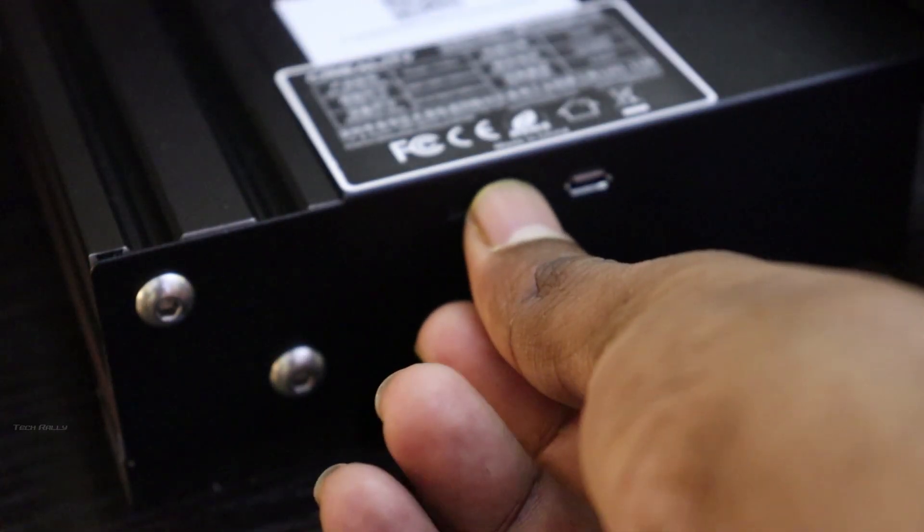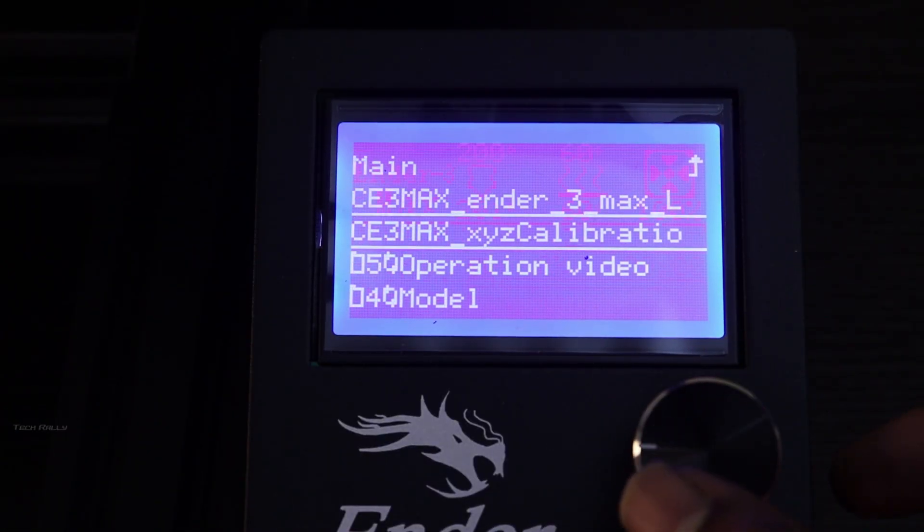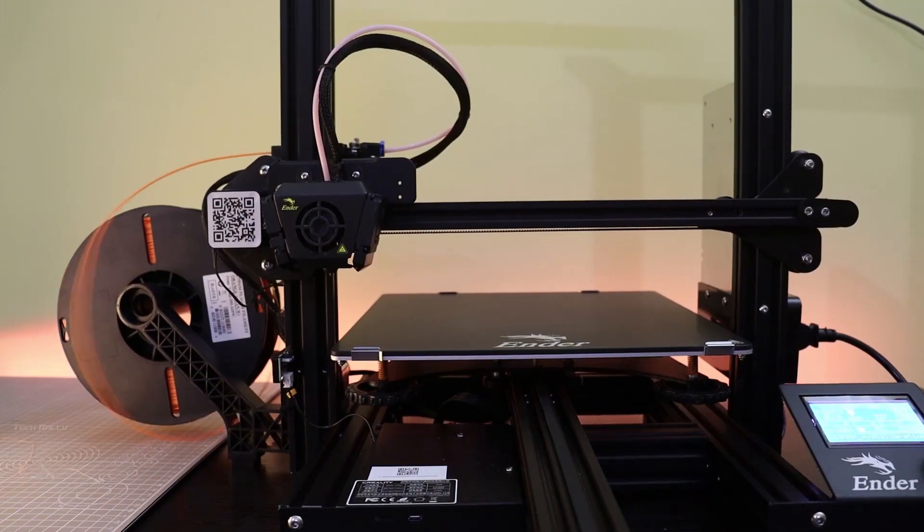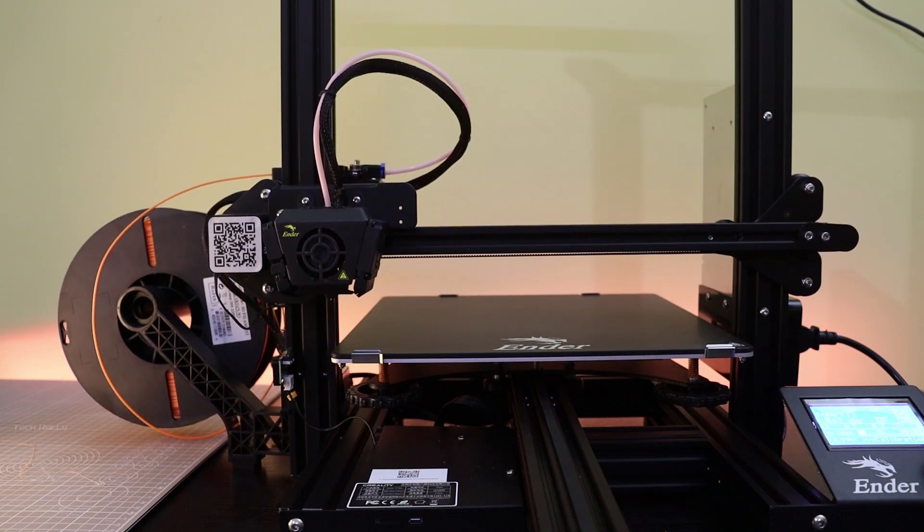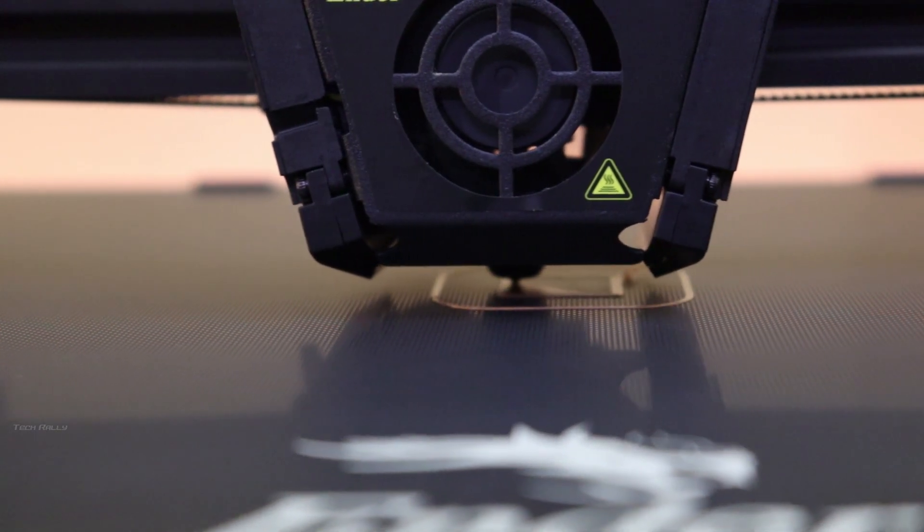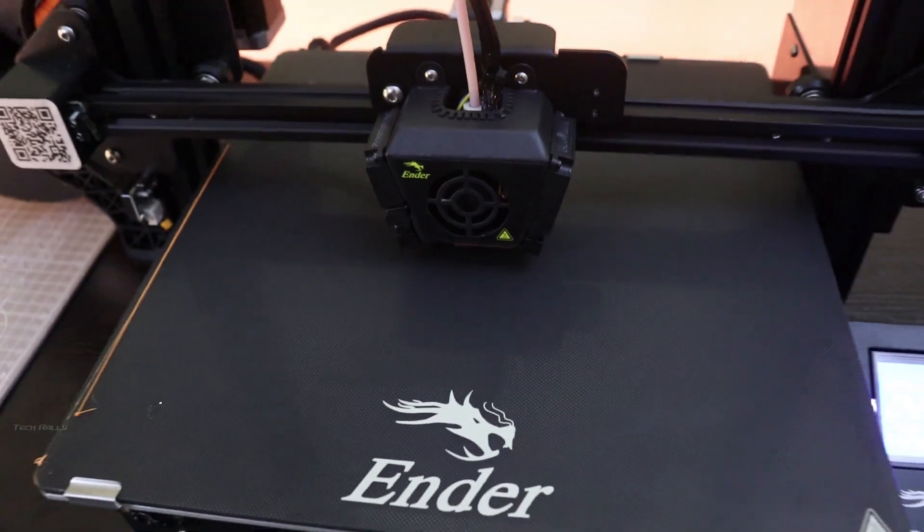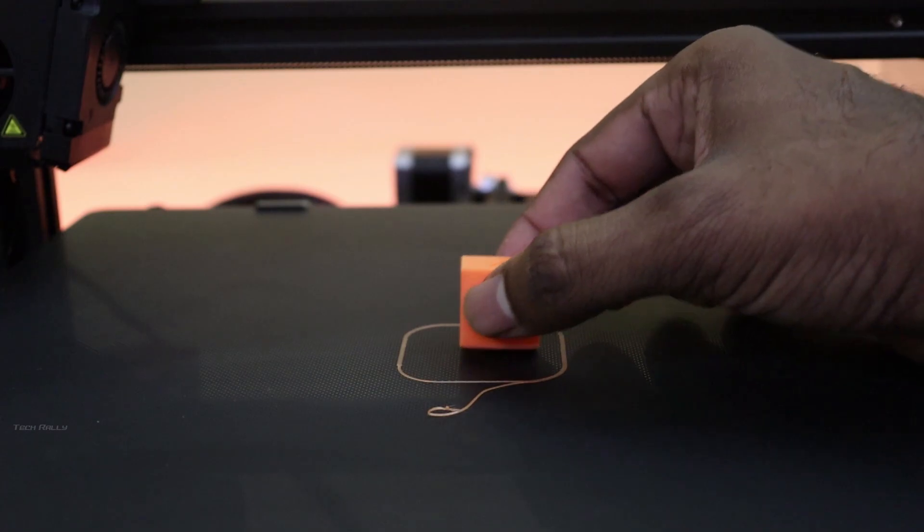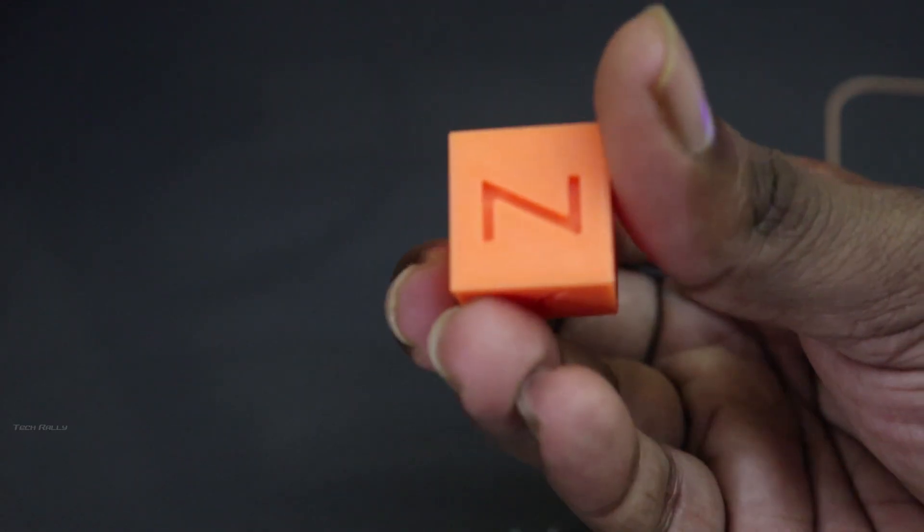I inserted the SD card and printed the calibration cube first. Initially the filament didn't stick to the bed, and after the bed leveling and cleaning the bed, it works. I could finally print the cube, but the filament slightly popped at the bottom.